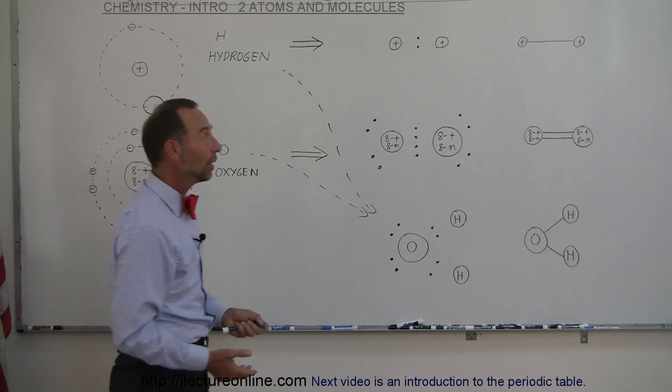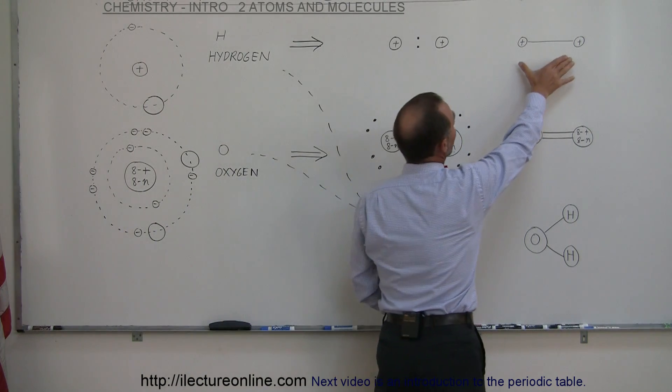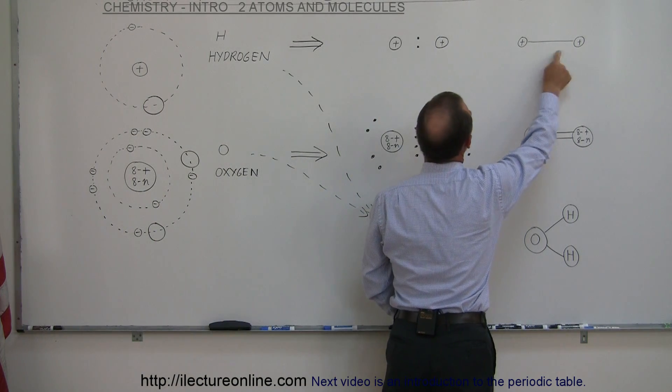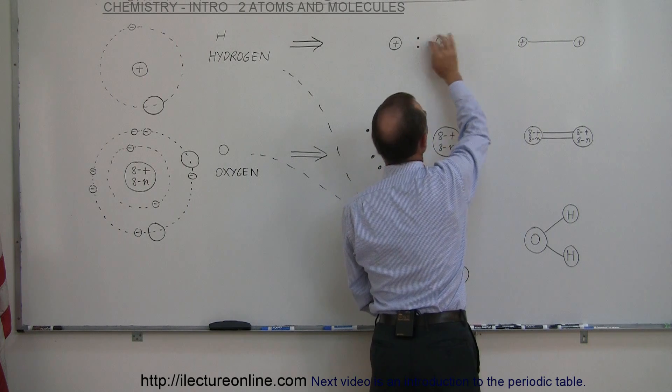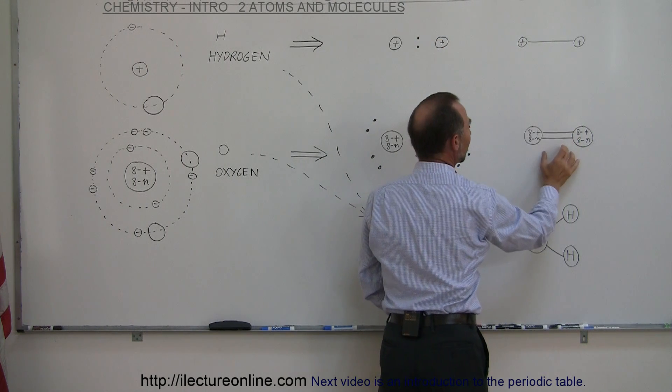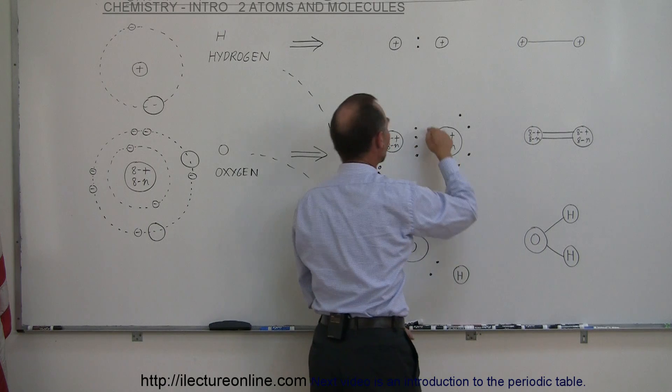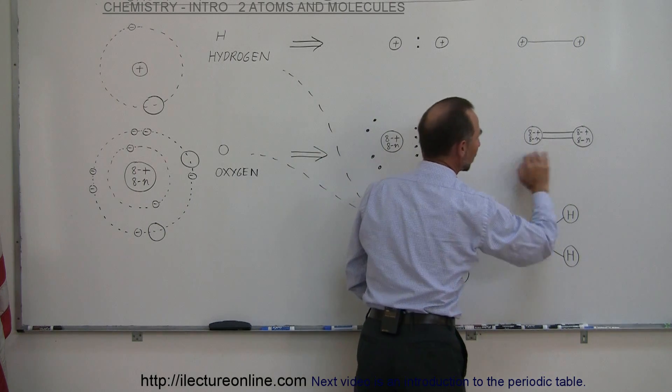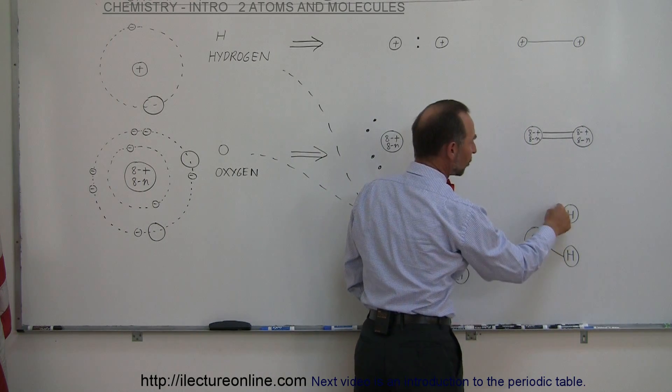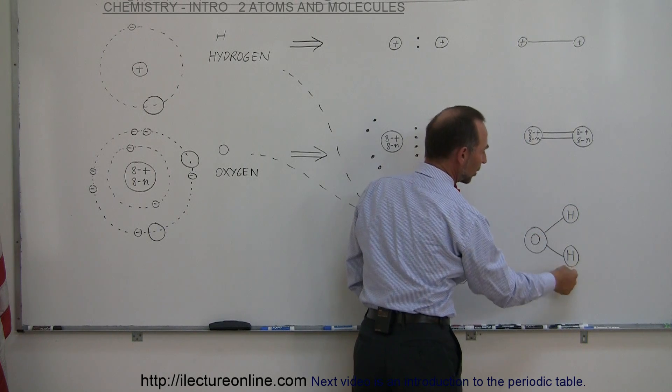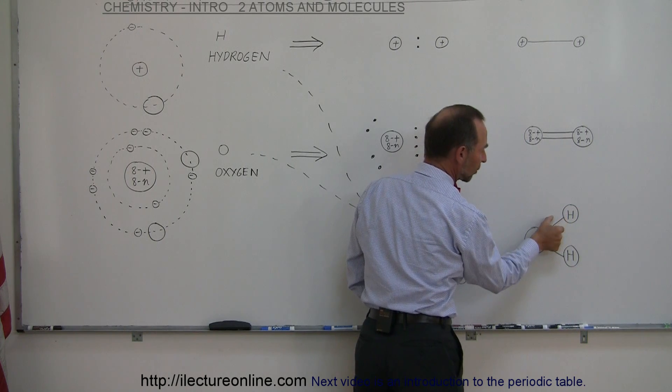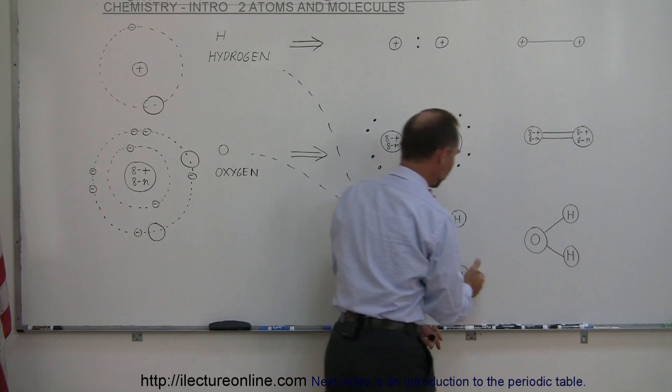Ultimately, we can depict these molecules like this. Here we have what we call a single bond caused by two electrons being shared between the two atoms. Here we have what we call a double bond where we have four electrons being shared between the two atoms. Here we have two single bonds between each hydrogen and the oxygen—hydrogen and oxygen—where two electrons are shared here and two electrons are shared here.